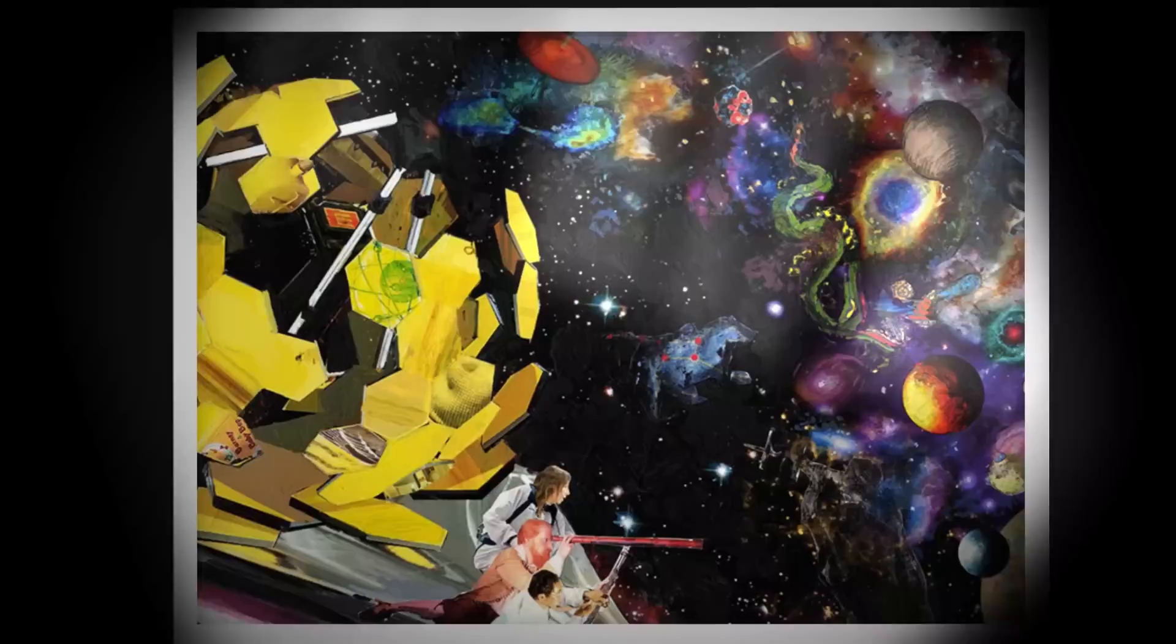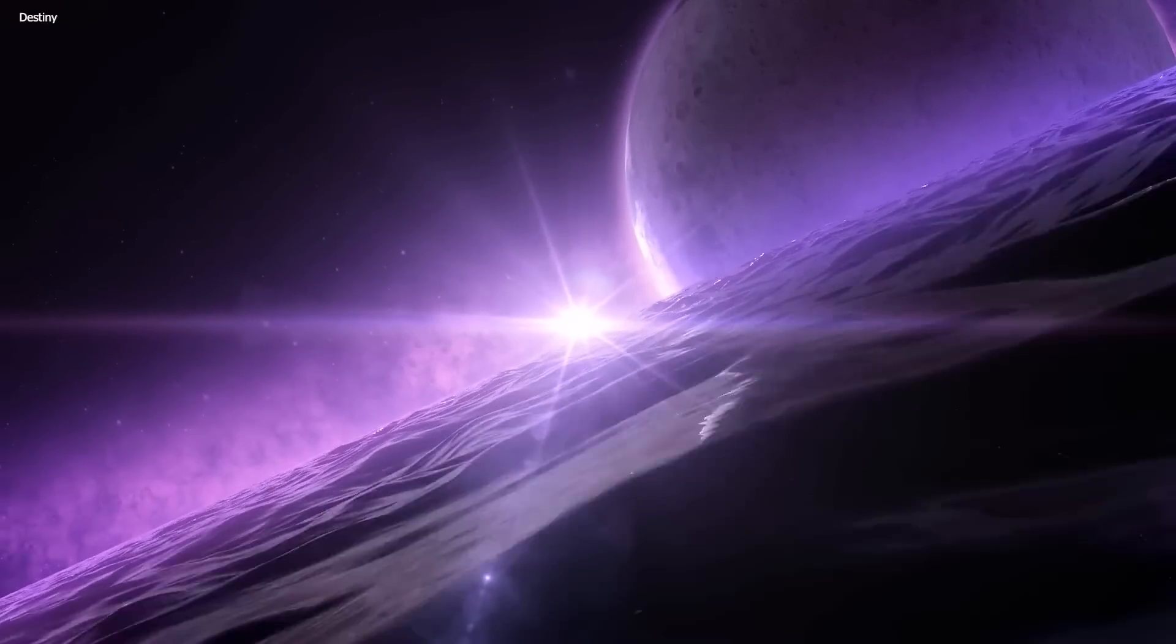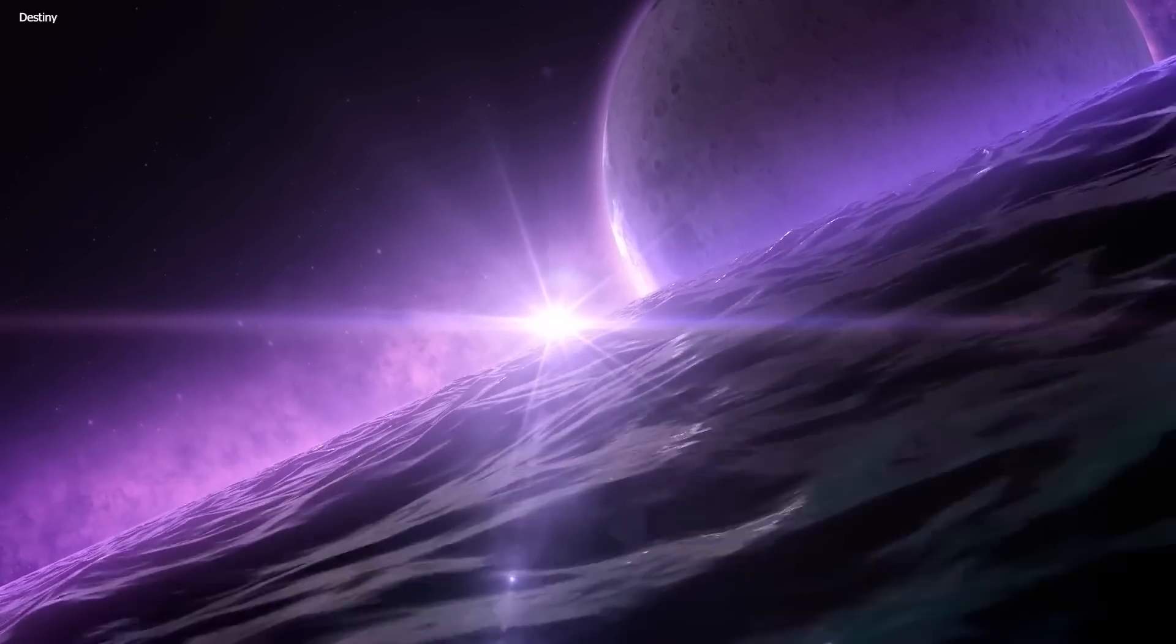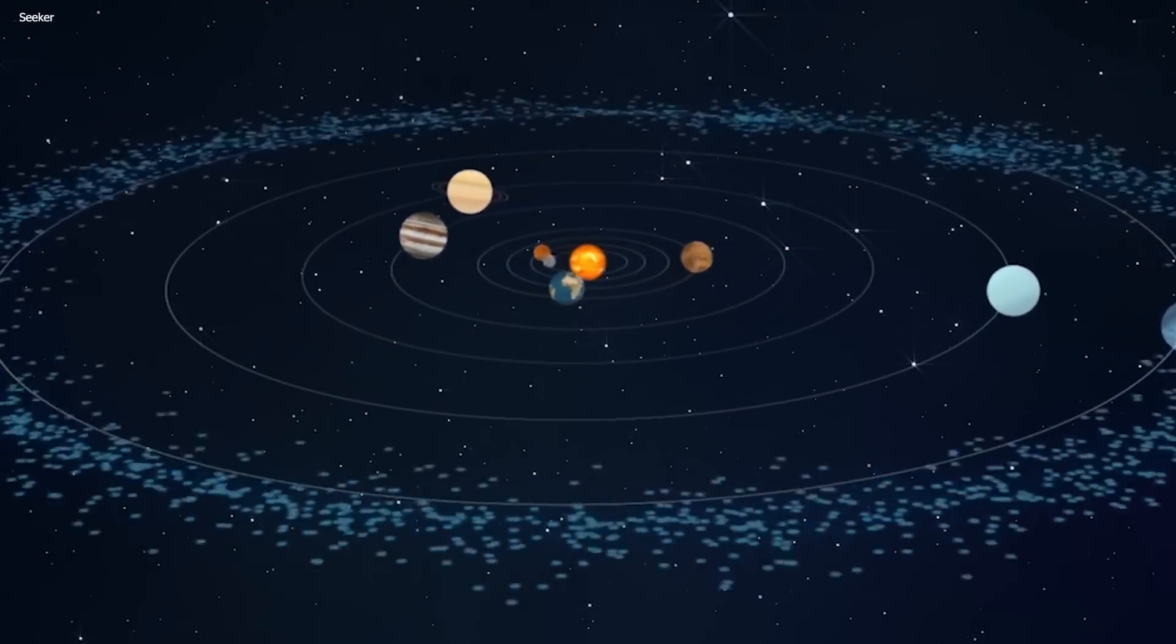This is why it's shocking that the James Webb Telescope just detected 500 huge objects appearing near us. Join us as we dig deeper into this shocking discovery and how it might just change everything we've ever known about our own solar system.